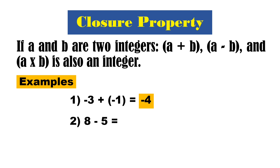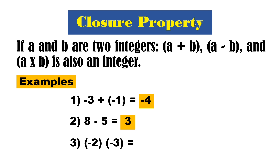Next example: we have 8 minus 5. 8 is an integer, 5 is an integer. Therefore, their difference is an integer — that is positive 3. How about example 3? We have negative 2 times negative 3. Negative 2 is an integer, negative 3 is an integer. Therefore, their product is positive 6 — it is also an integer.